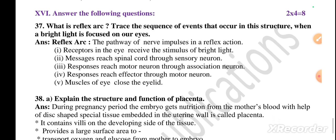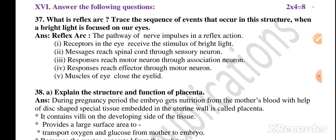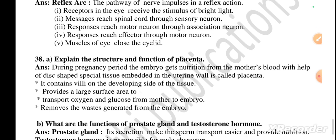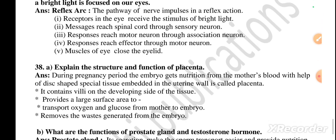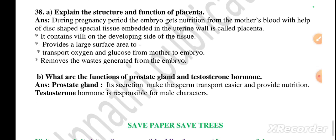Question main number 16 — four mark questions, total two questions, eight marks. Question 37: what is a reflex arc? Trace the sequence of events when a bright light is focused on our eye. Answer: the reflex arc is the pathway of nerve impulses in a reflex action. Receptors in the eye receive stimulation of bright light; messages reach the spinal cord through sensory neuron; responses reach motor neuron through association neuron; responses reach the effector through motor neuron; muscles of the eye close the eyelid.